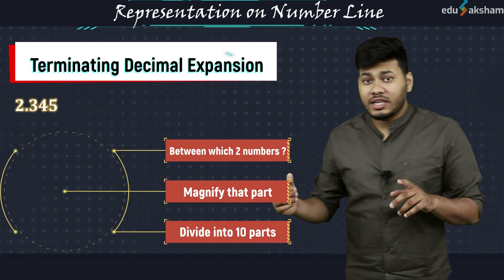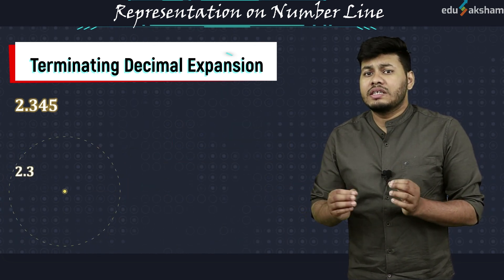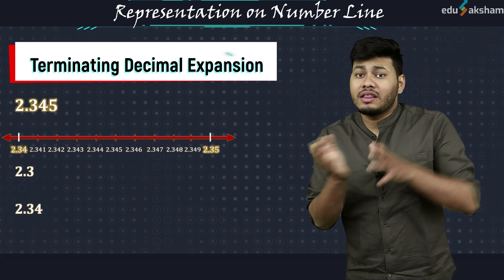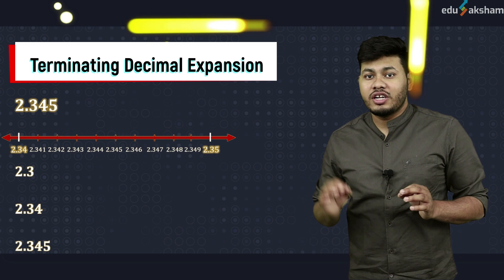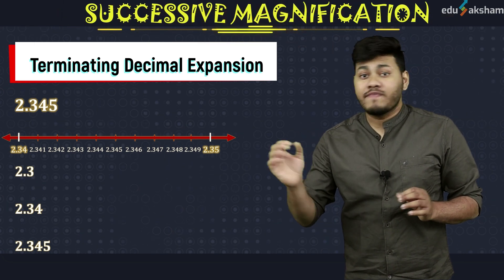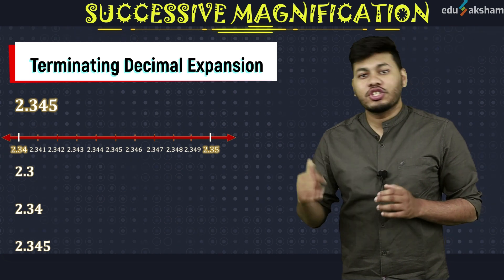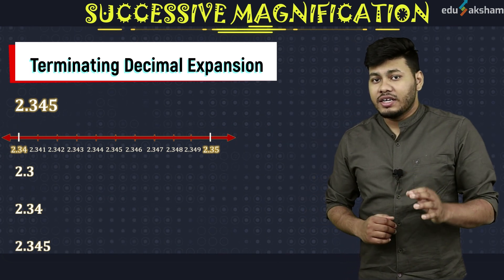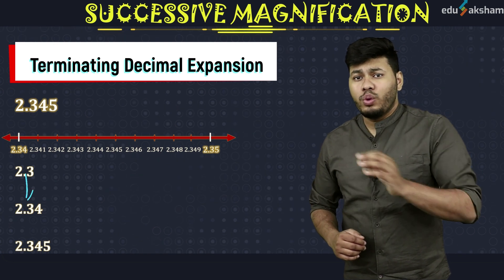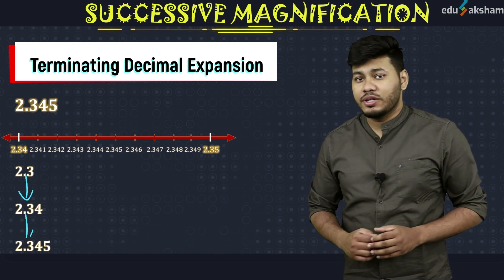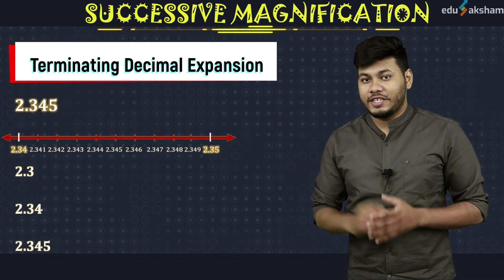We marked those parts accordingly, and with every step we kept on considering one more decimal place than the previous step. This process is called the process of successive magnification. It helps us to visualize decimal expansions on the number line, and with each step we kept on getting closer to the number. This is how we locate a terminating decimal expansion on a number line.